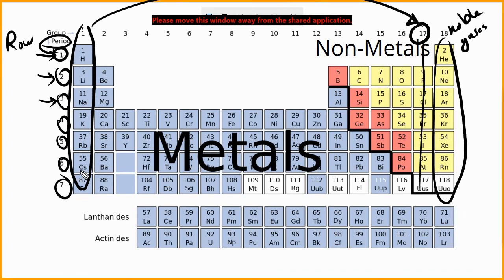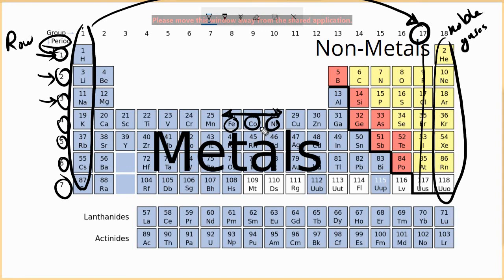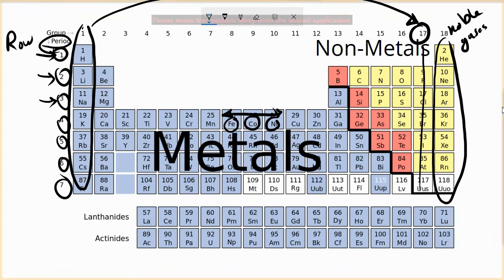Even elements in the same row can be close in properties. For example, iron, cobalt, and nickel are all in the same row and all of them are magnetic — they can all be attracted by a magnet. That's our basic information about the periodic table for today; we will continue tomorrow.